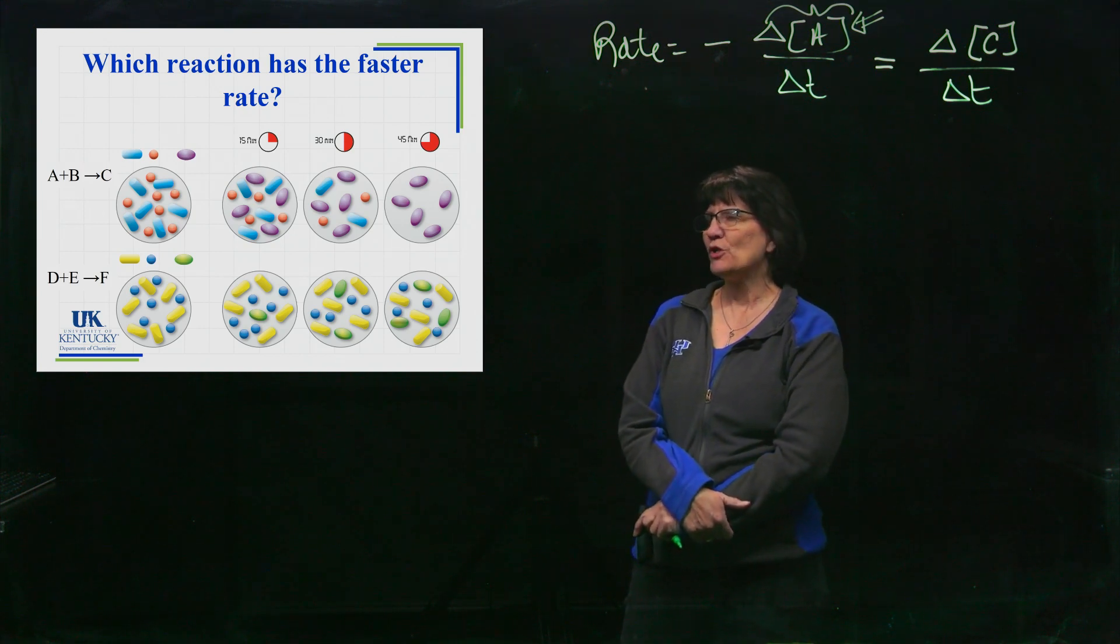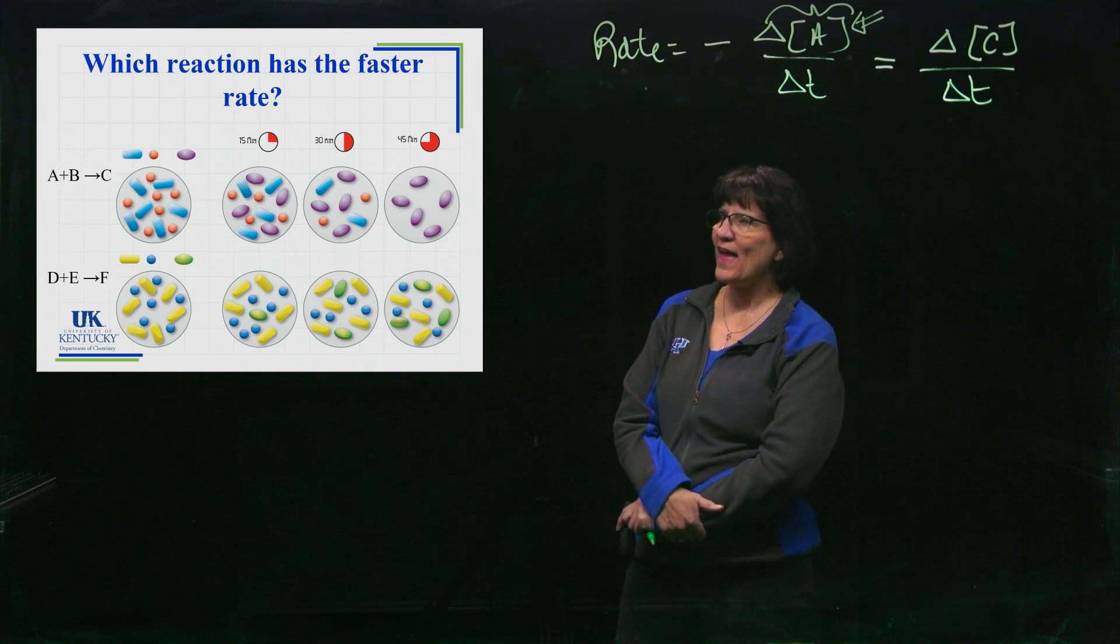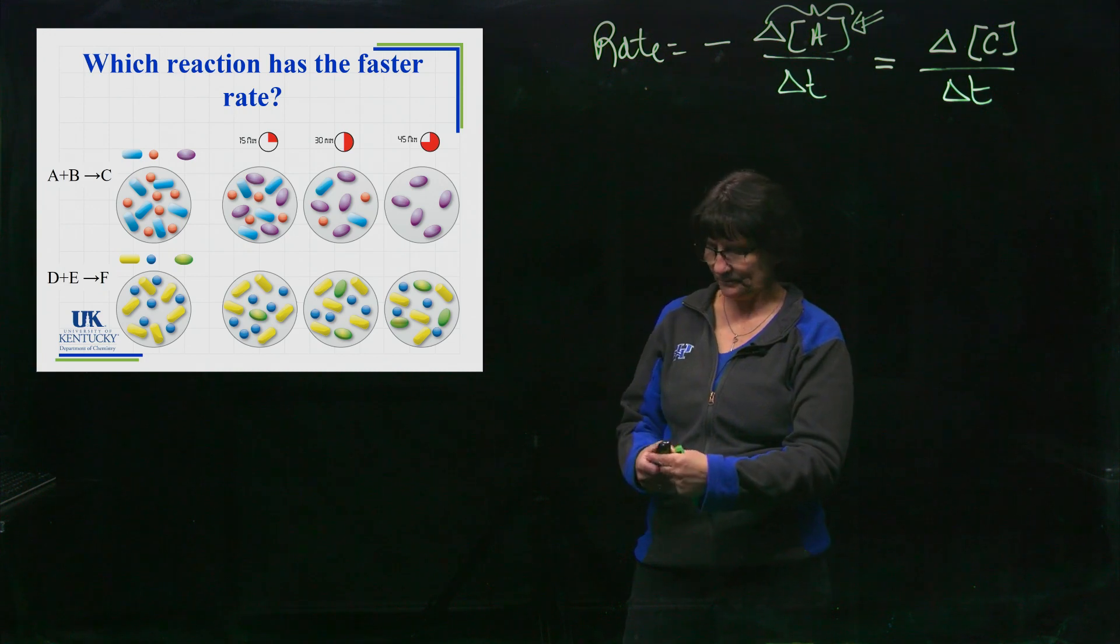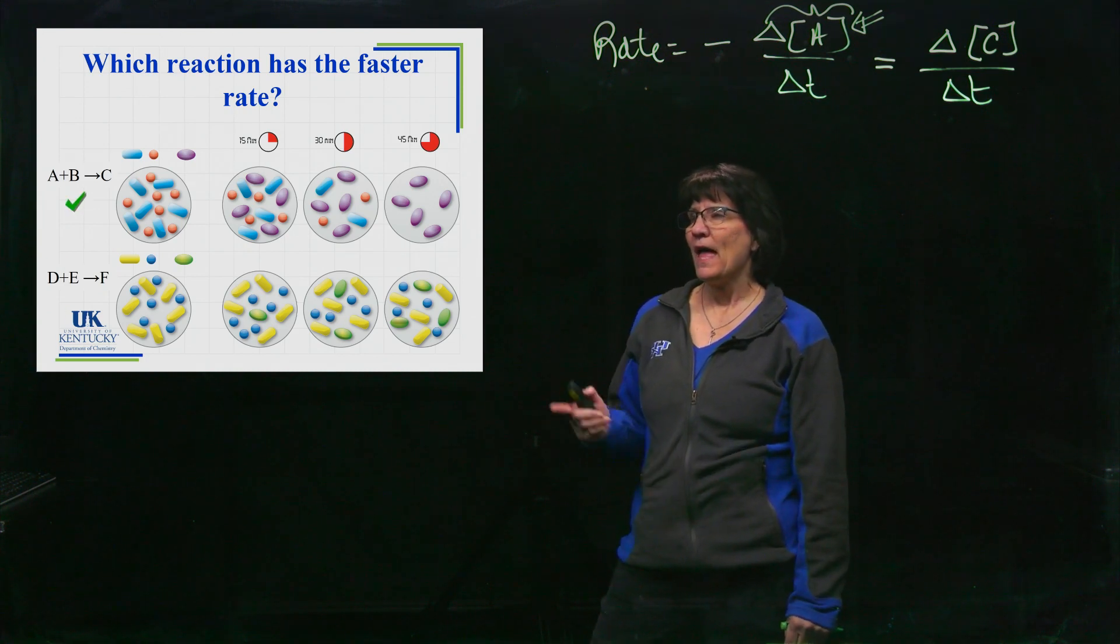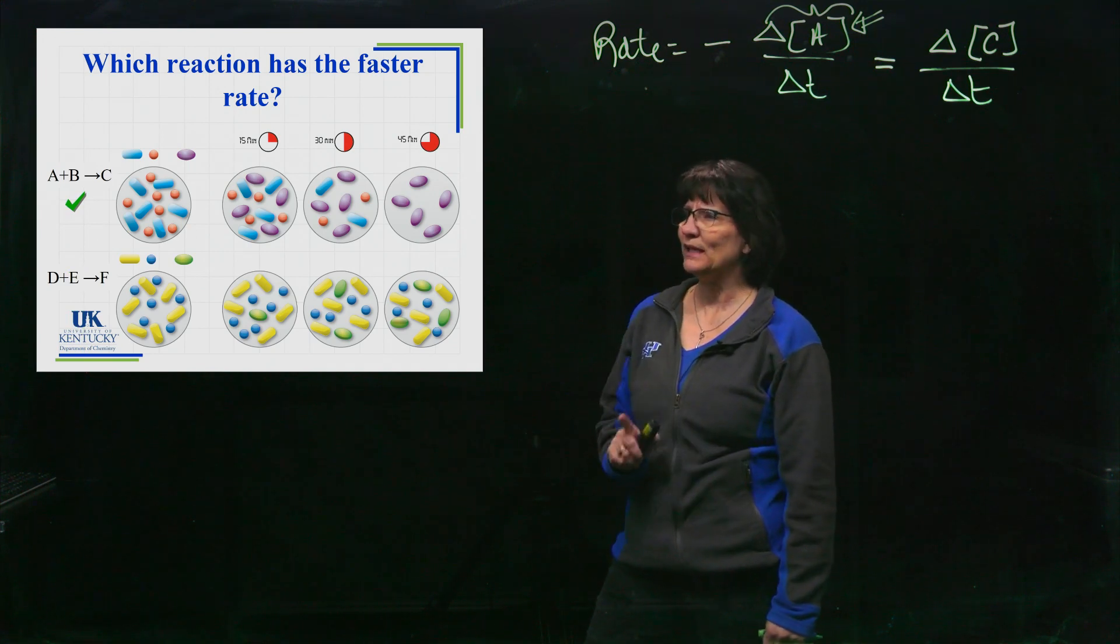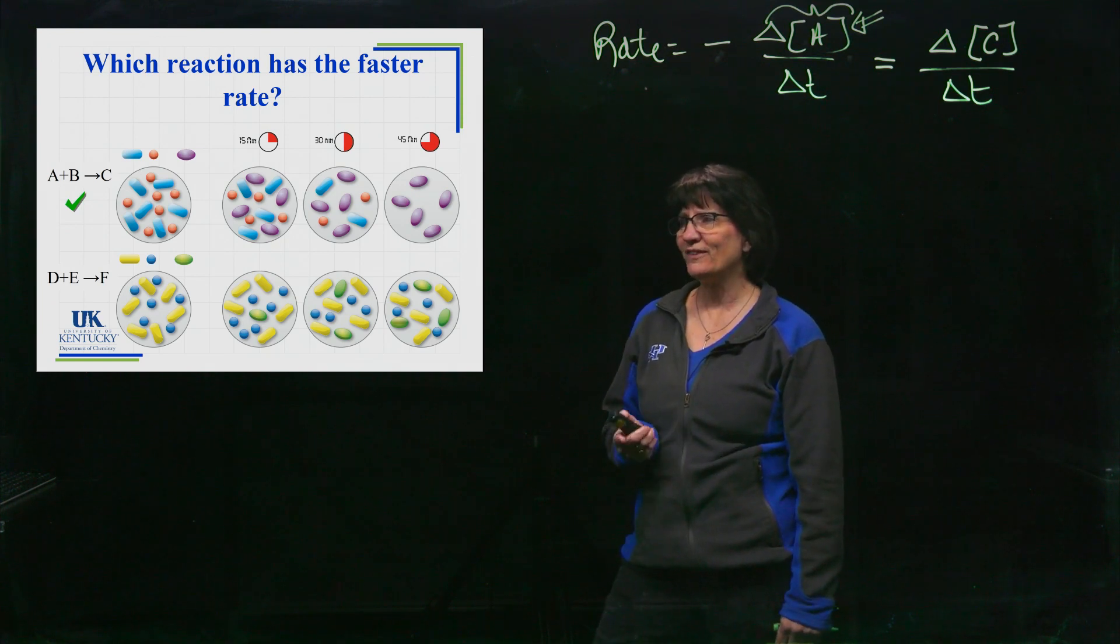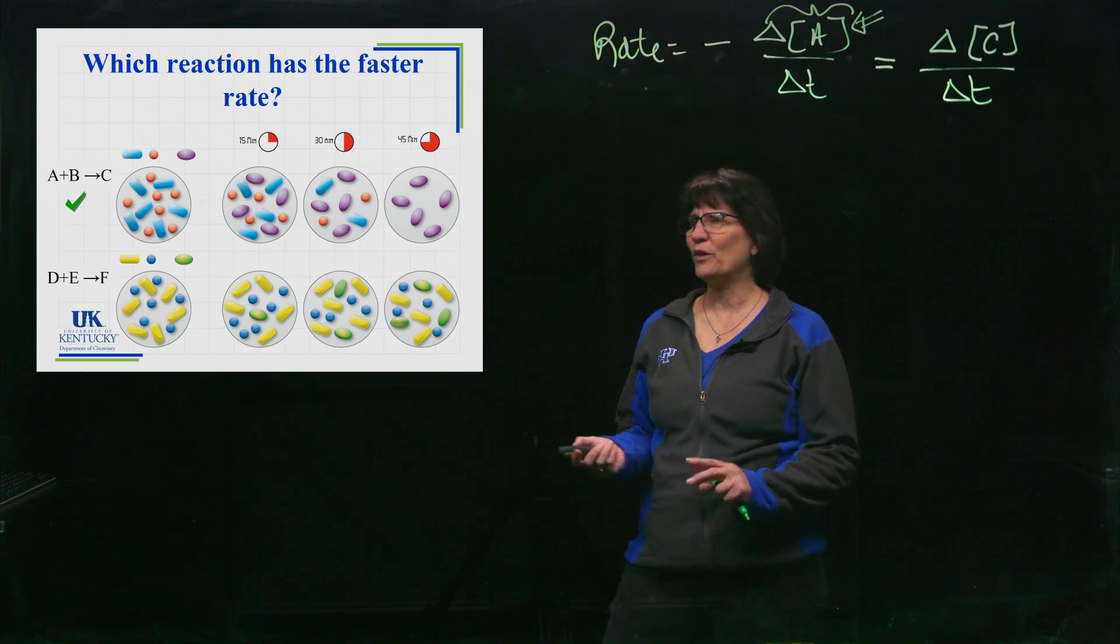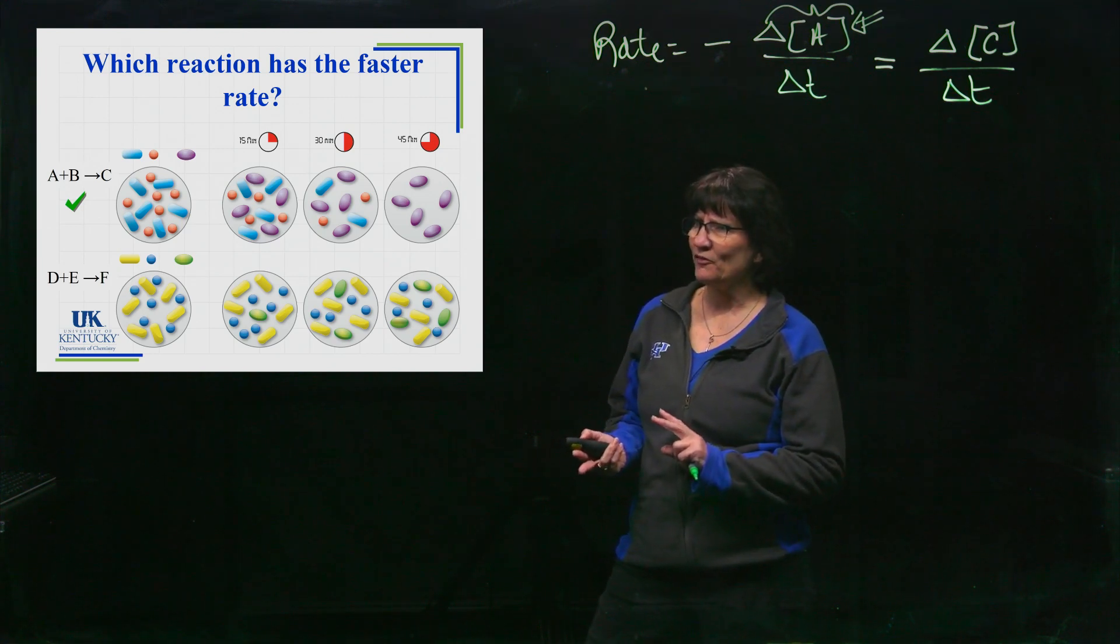I see these two reactions here on the screen. I want you to look at those two and select the one that is the faster rate. Well, did you select the first one? Okay, in the 45 seconds, it is complete, right? It has completely used up its reactants and formed products. Now we started with the exact same amount of reactants and products, so it's not like we started with more and therefore it takes longer.